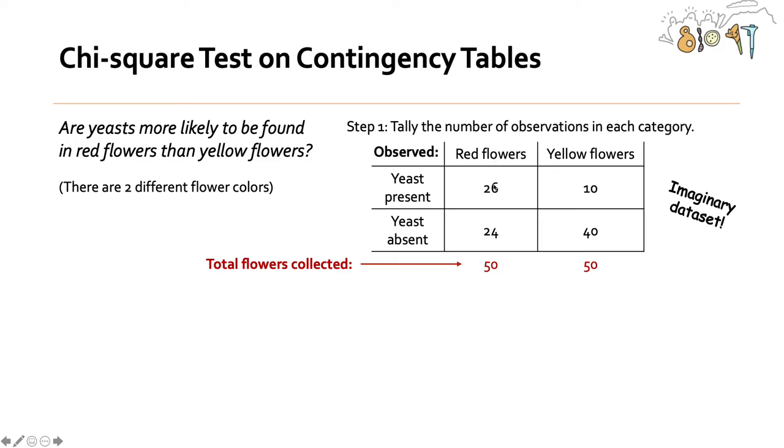So for the red flowers, 26 red flowers had yeast and 24 did not for a total of 50 flowers collected. And for yellow flowers, let's just say there were 10 flowers where we observed yeast and 40 flowers where we did not. Again, we looked at 50 flowers in total.